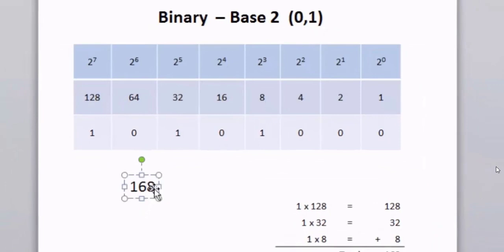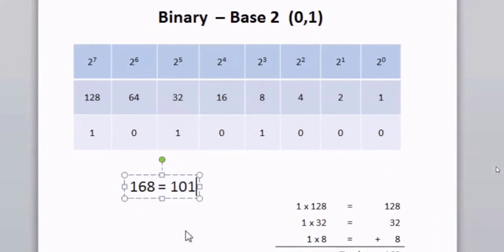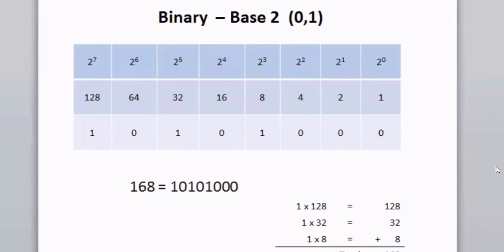And 168 in binary equals 1, 0, 1, 0, 1, 0, 0, 0. I now have 1 in the 128s place, 1 in the 32s place, and 1 in the 8s place. And 128 plus 32 plus 8 equals 168.